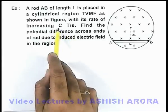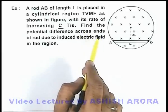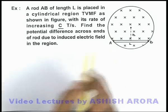Here we are given with the value of dB by dt, and we are required to find the potential difference across the ends of the rod due to induced electric field in the region.